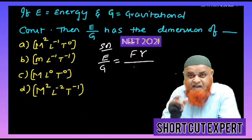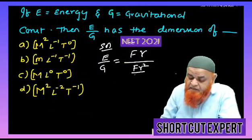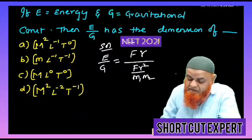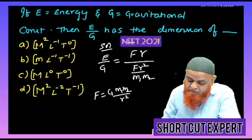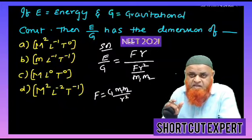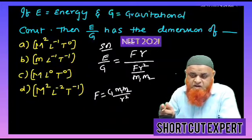And here gravity means it is equal to FR square by M1 M2, because F is equal to G M1 M2 by R square. So I am taking G as FR square by M1 M2.